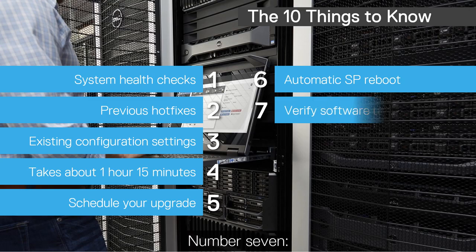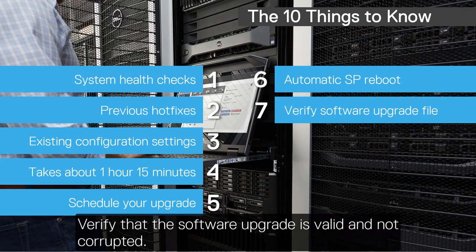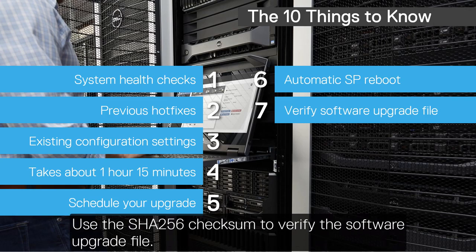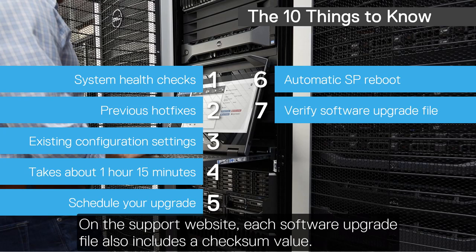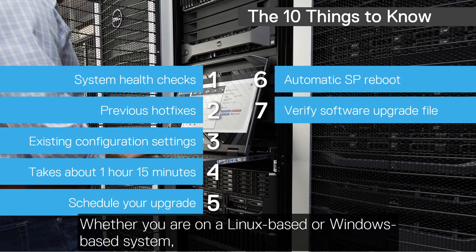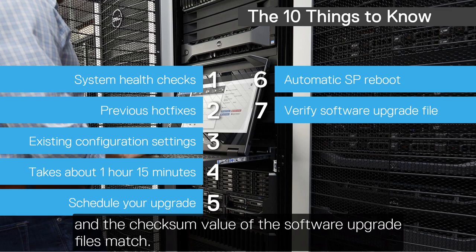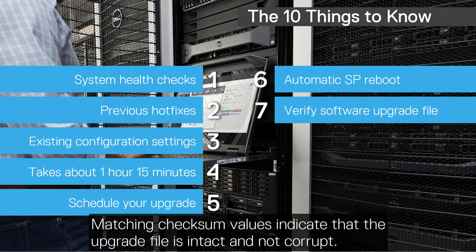Number seven: verify that the software upgrade is valid and not corrupted. Sometimes software upgrade files may get corrupted during the download. Use the SHA-256 checksum to verify the software upgrade file. On the support website, each software upgrade file also includes a checksum value. Whether you're on a Linux-based or Windows-based system, confirm that the checksum value on the support website and the checksum value of the software upgrade file match. Matching checksum values indicate that the upgrade file is intact and not corrupt.